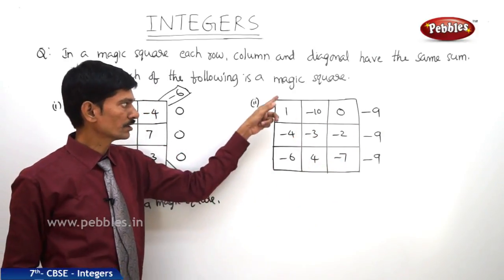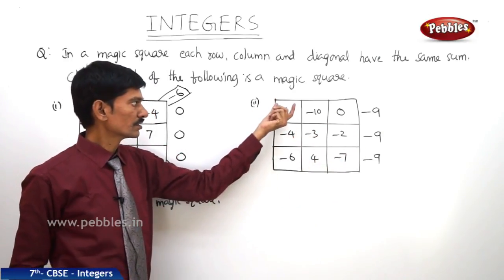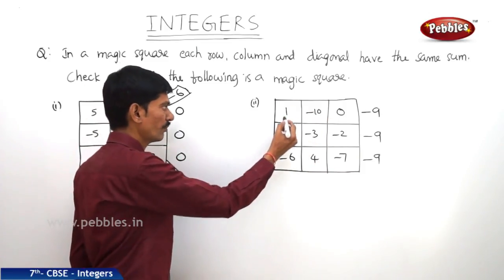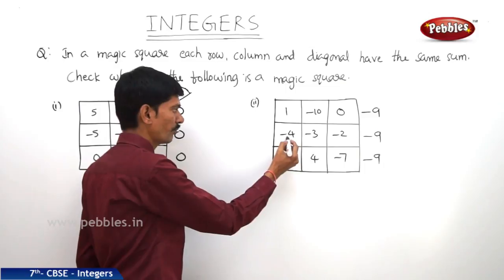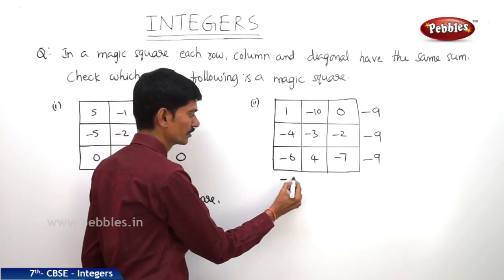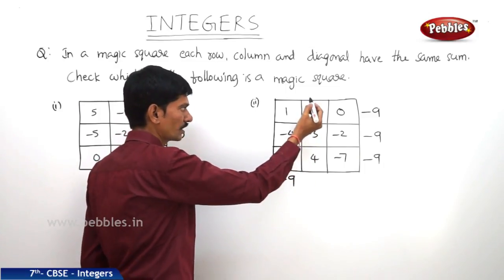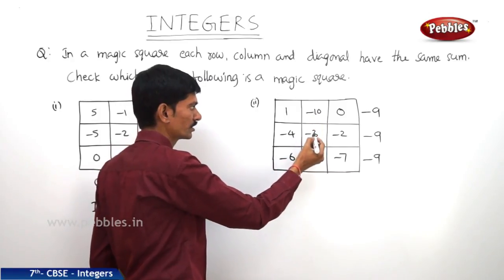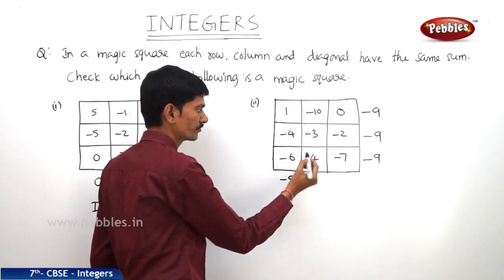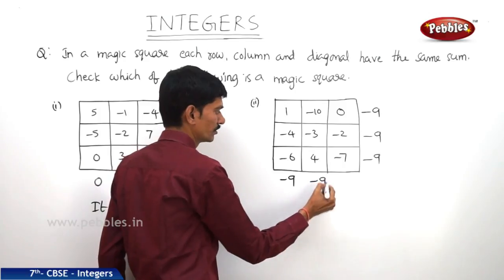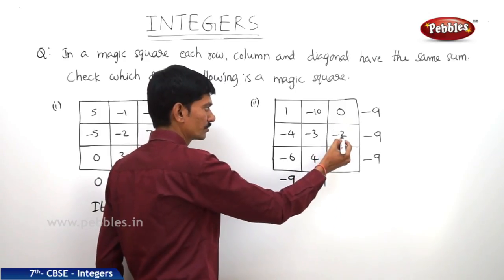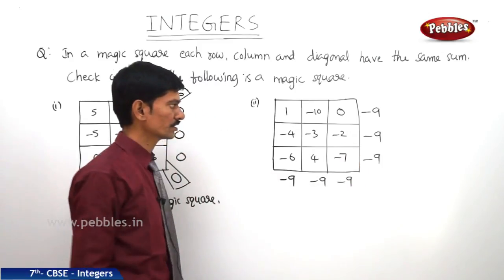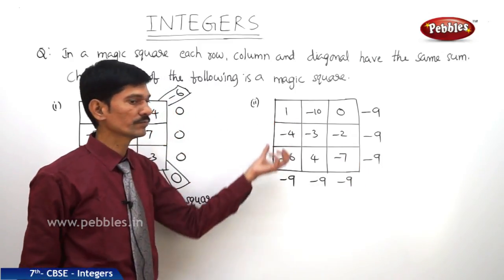Now let us check whether the sum of each column is the same or not. Now 1 minus 4 is minus 3, and minus 3 minus 6 is minus 9. And in the second column, minus 10 minus 3 is minus 13, and minus 13 plus 4 is minus 9. Now in the third column, minus 2 minus 7 is minus 9. So here also, we got the same sum in each column.